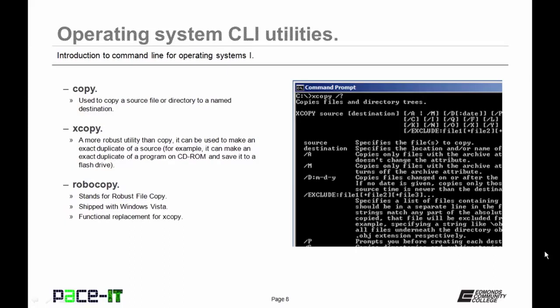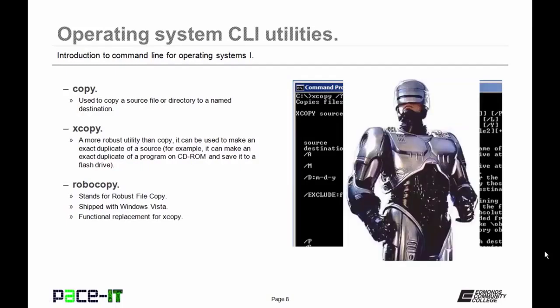Copy didn't have quite the utility Microsoft was looking for, so they came up with Xcopy — a more robust utility. It can make an exact duplicate of a source and can duplicate a program onto a CD-ROM or flash drive. Then Microsoft came up with Robocopy — robust file copy — which ships with Windows Vista and newer. It is the functional replacement to Xcopy and is again more robust.